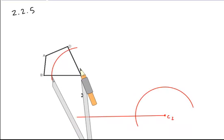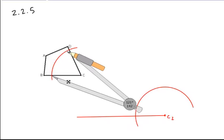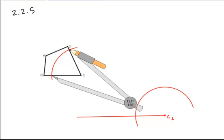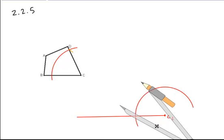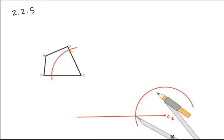And then from each of the arc side intersections on our original angle, where the arc and the side intersect each other, what we're going to do is we're going to measure that distance with our compass, and then we're going to duplicate that on our construction.